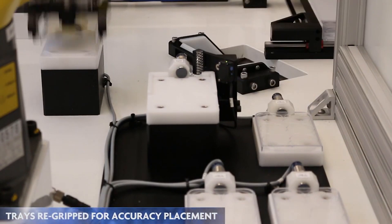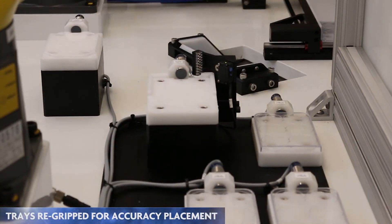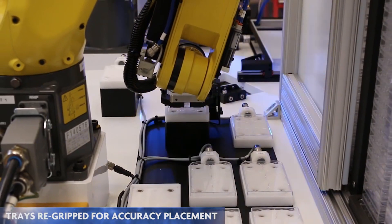One FANUC LR Mate loads the transfer and places the trays into a re-grip station for accurate placement.